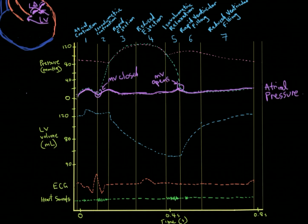Next let's trace the left ventricular pressure line. During atrial contraction, the pressure in the left ventricle raises a bit because blood rushing from the left atrium into the left ventricle hits the walls and increases the pressure. As the left atrium finishes filling the ventricle, pressure comes down slightly, because the blood is just dripping into the existing blood rather than hitting the walls.